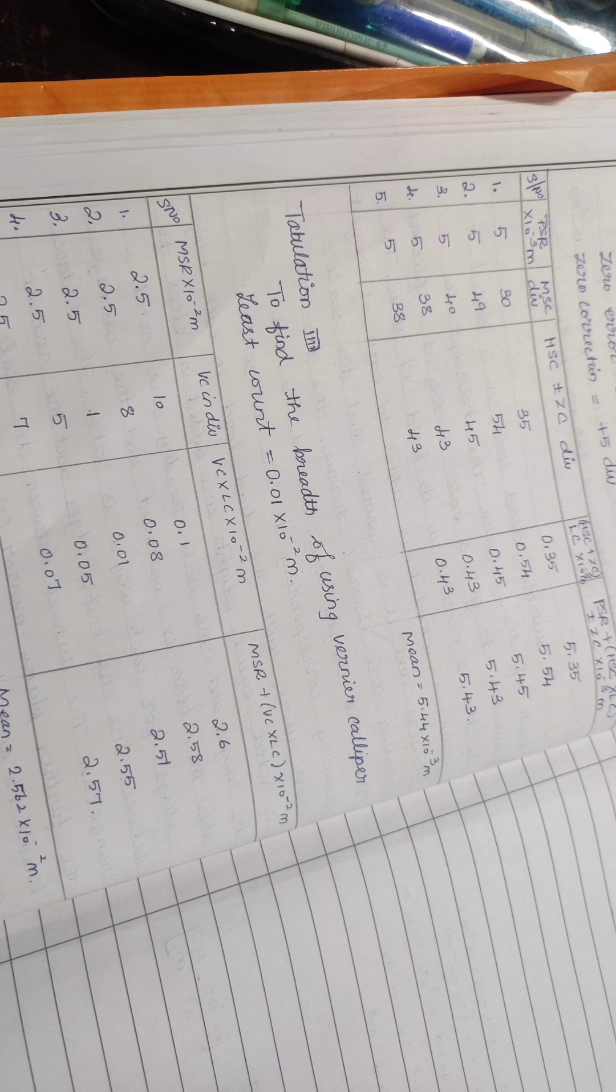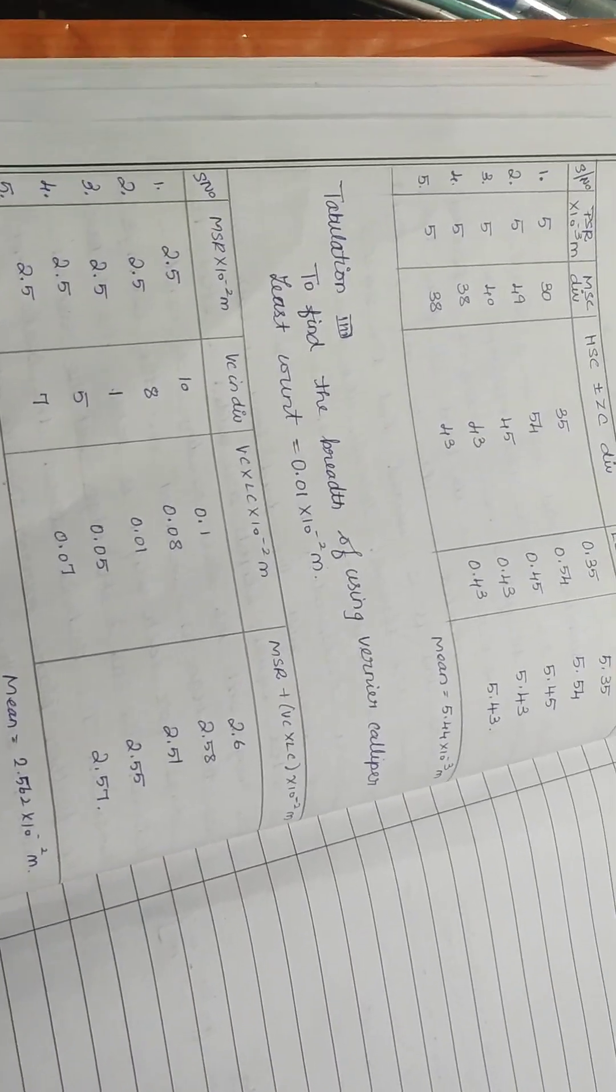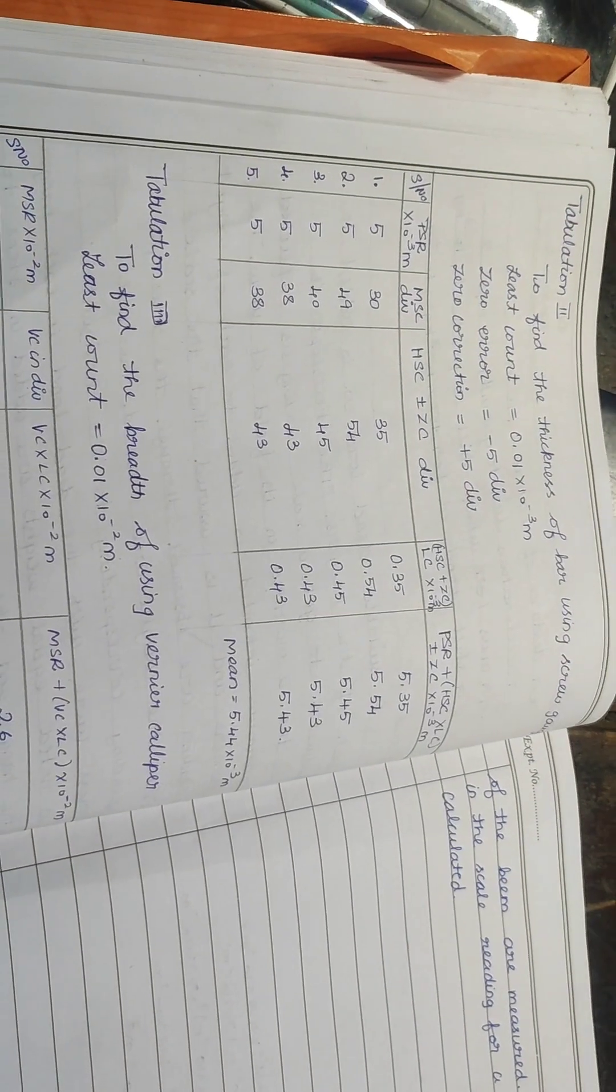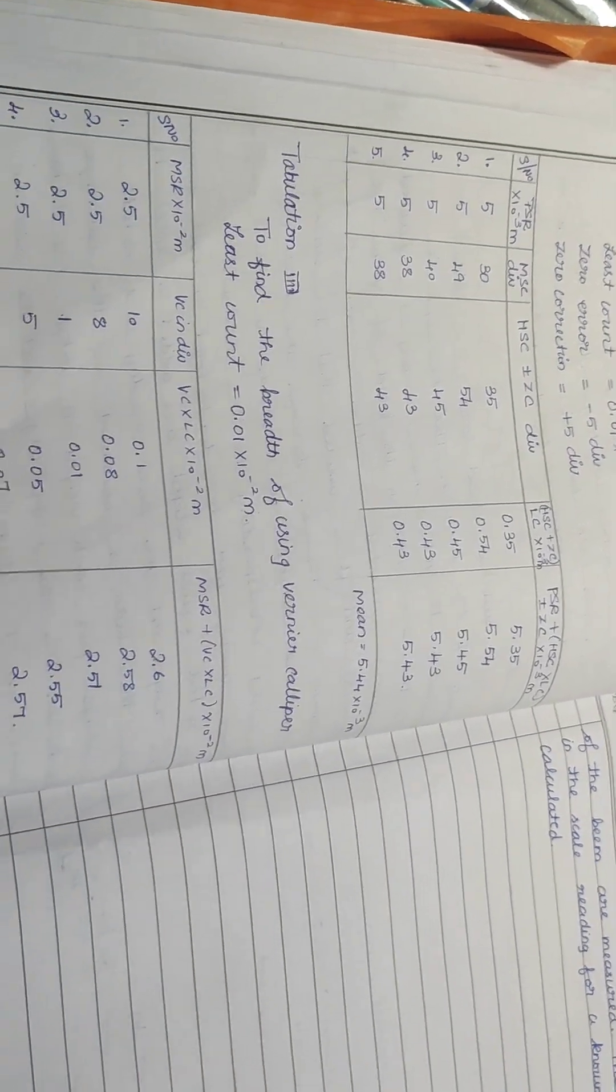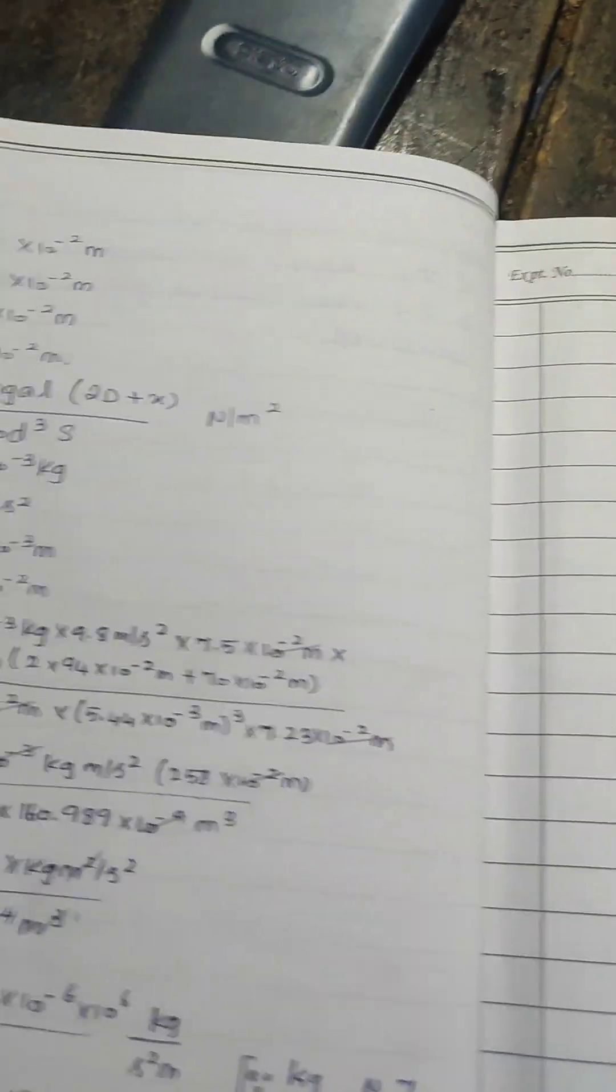We are using slotted weights for this. By using screw gauge and vernier caliper, we are going to measure the thickness as well as the length of the beam. We already know how we can take the thickness and length.